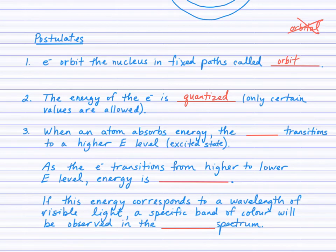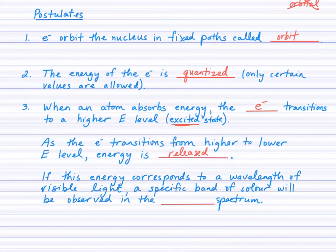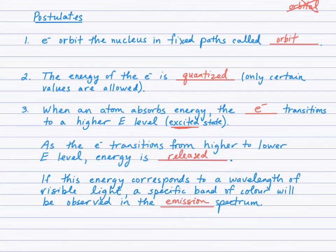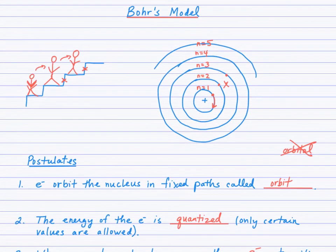Now, the third postulate here has three parts to it, and I'll go back up to the picture in a minute to elaborate on that. So, when an atom absorbs energy, it's the electron that moves. The electron transitions to a higher energy level, which we call an excited state. As that electron transitions back down from higher to lower energy levels, then energy will be released. And the key is that we will see that release, that energy release, as a specific band of color in what we call the emission spectrum of the element. And this is something, an experiment that we'll look at in class, so that you can actually visualize and see this.